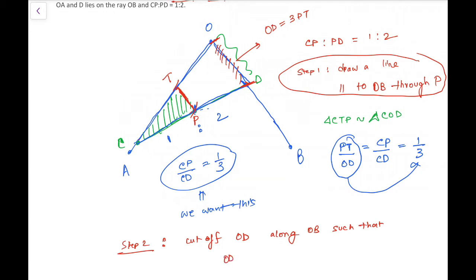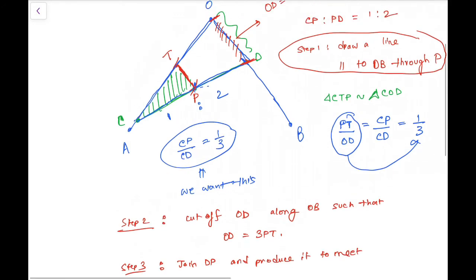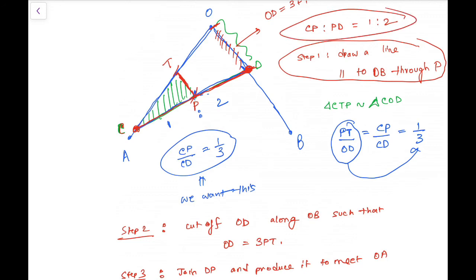And the third step is: join DP and produce it to meet OA at the point C. So by your construction, your CP over PD would be 1 to 2. Thank you for watching and we will be shortly posting the second video.